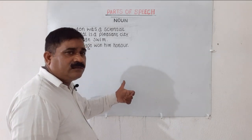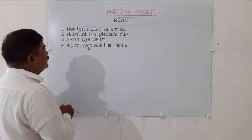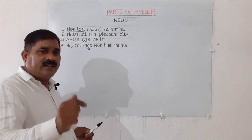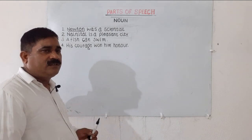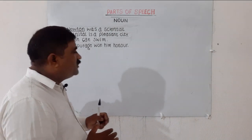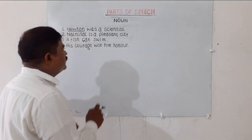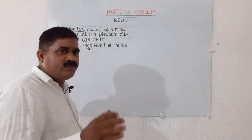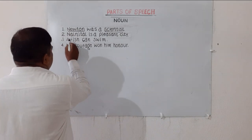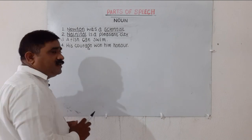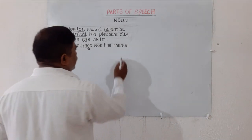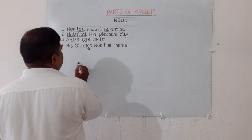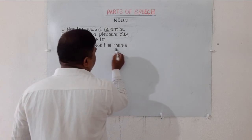Have a look at the first sentence. In this sentence, Newton is a word that stands for a person — Newton is a person. Likewise, scientist is a word that stands for a person. In the second sentence, Nanythal is a place, city is a place. Fish is a thing, courage is a thing, owner is a thing.